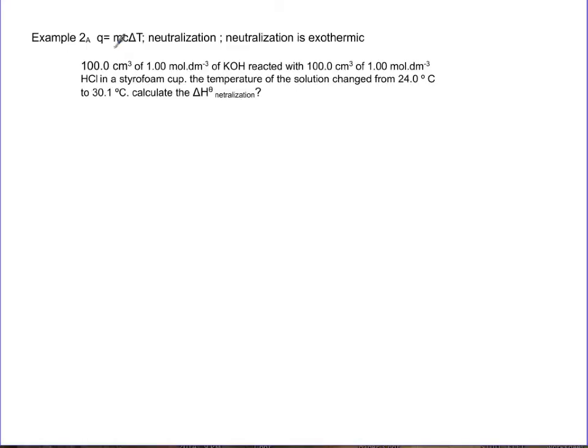For this example applying MCAT, I'm going after neutralization, which is an exothermic reaction. I have a base, potassium hydroxide (KOH), reacting with hydrochloric acid (HCl). It produces potassium chloride (KCl) and water (H2O).